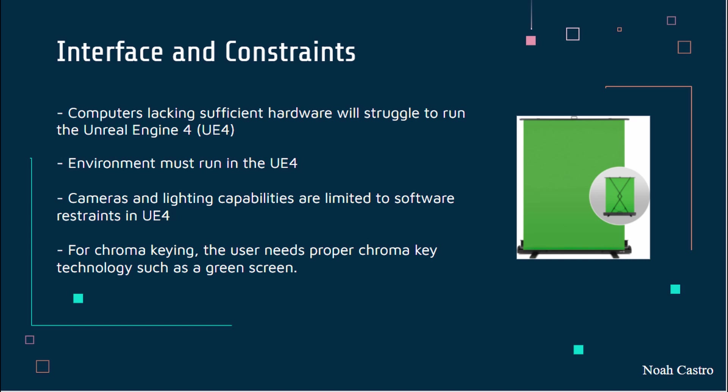Third, the camera and lighting capabilities are limited to the software restraints in Unreal. While the camera and lighting features are more than what's capable in real life, you're still limited to what the software has to offer, and for that reason it is a constraint.